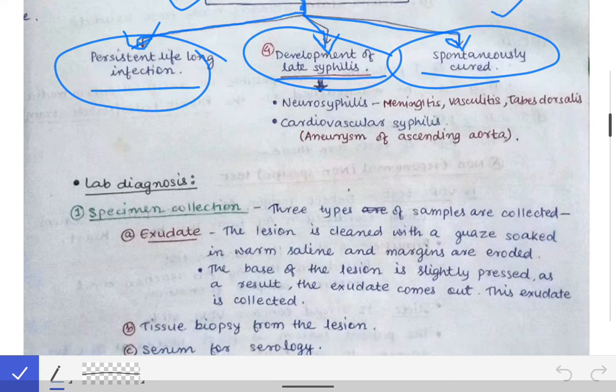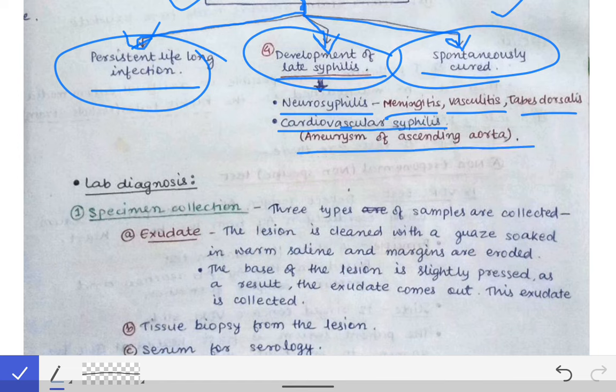In late syphilis, neurosyphilis occurs in which we see meningitis, vasculitis, and tabes dorsalis. There also occurs cardiovascular syphilis, in which aneurysm of the ascending aorta is the most common complication.